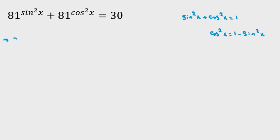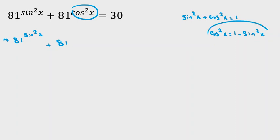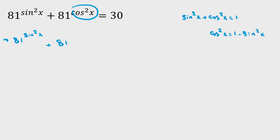So for the first part, we can write 81 to the power of sine squared x plus 81, and replace cosine squared x with 1 minus sine squared x, giving us 81 to the power of 1 minus sine squared x, equal to 30.